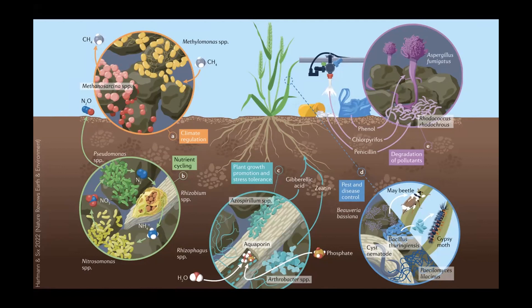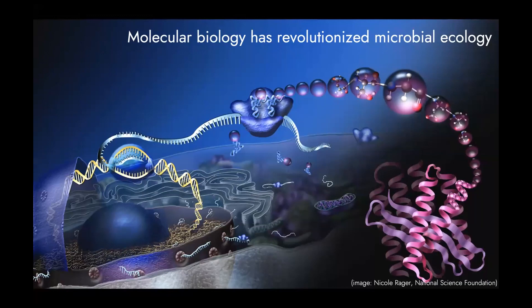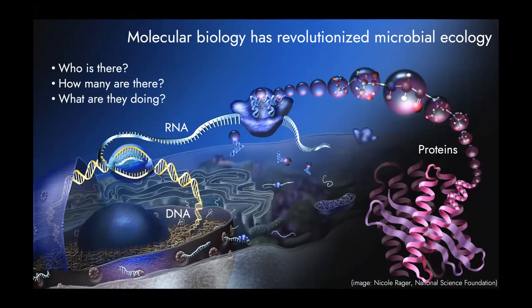Addressing this complexity has been limited by available techniques, but advancements in microbiology have revolutionized how we can do microbial ecology. We can now address molecules such as DNA, RNA, or proteins to better understand who is there and what they are doing — by looking at different genes, gene transcripts, or proteins directly extracted from soil. I use these molecular tools to understand what kind of microbes are present under certain conditions and what they can potentially do in these systems.